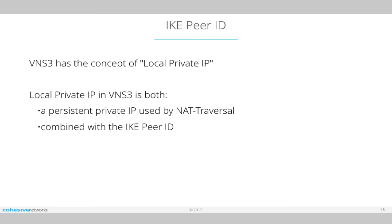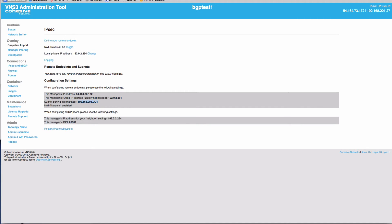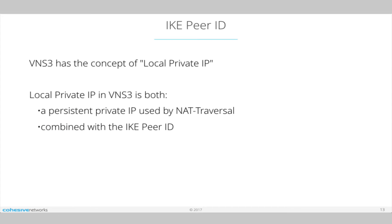So what the local private IP is, is a persistent private address. Regardless of what VPC address you have, it's what the other side can be told to use for that setting on their side. It's a way to give you better configurability without any changes to the configuration in the event of a change. Where you see this on VNS Cubed is the local private IP address. So that's what local private IP does in part.